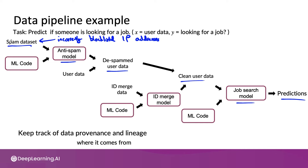Data provenance refers to where the data came from — for example, who did you purchase the spam IP address list from? And lineage refers to the sequence of steps needed to get to the end of the pipeline. At the very least, having extensive documentation could help you reconstruct data provenance and lineage.